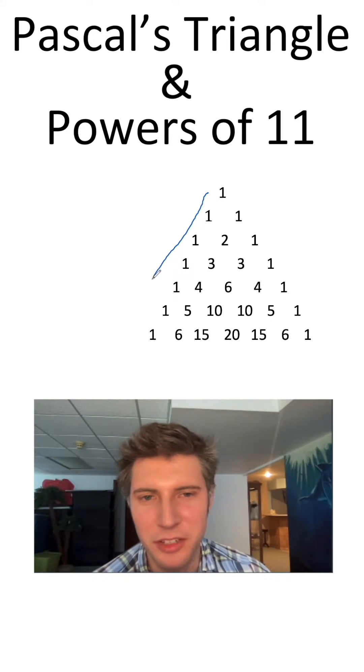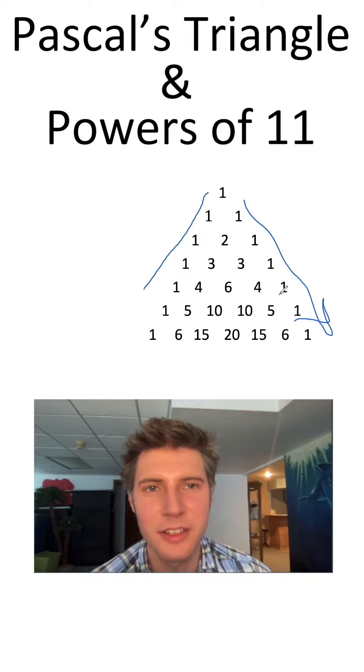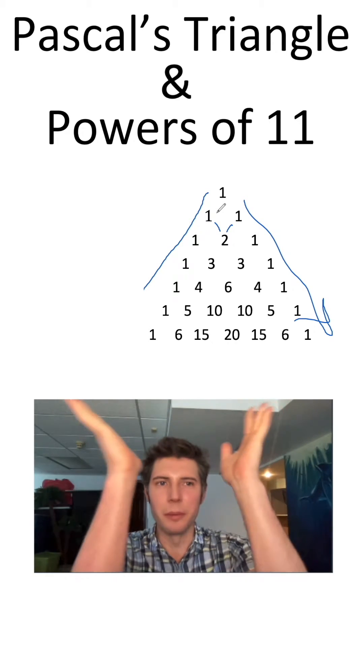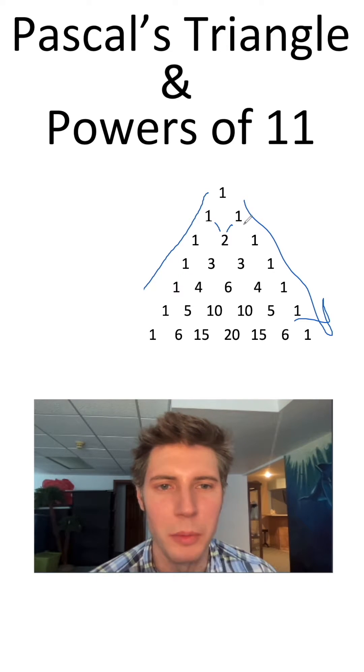Pascal's triangle is created by continually putting ones on both sides and then in the middle adding up the two numbers right above it in either corner. So 1 plus 1 is 2, 2 plus 1 is 3, 3 plus 3 is 6.